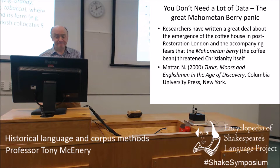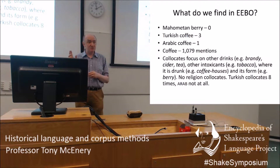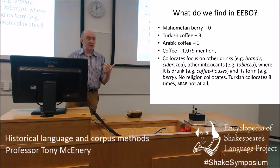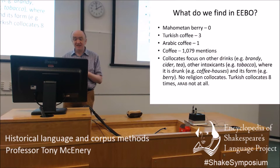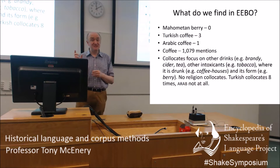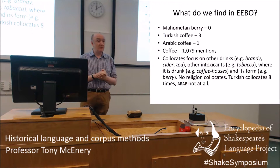But if we look in a lot of data — in the EEBO Corpus, early English books online, one billion words of data for the 17th century alone — Mohammedan Berry isn't mentioned at all. Coffee is mentioned plenty of times, and using collocation to see what coffee is talked about in relation to, it's linked with other drinks like brandy, cider and tea, other intoxicants like tobacco, where it's drunk such as coffee houses, and its form, the berry. There are no religion collocates at all — in general English at the time it's not associated with religion. Turkish does collocate with it as a specific form; Arab doesn't collocate with it at all, except in the form of Arabic coffee.